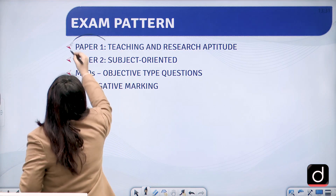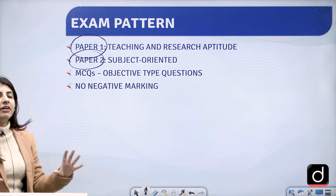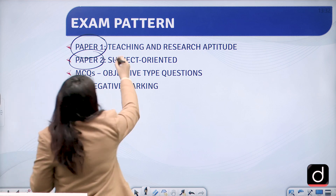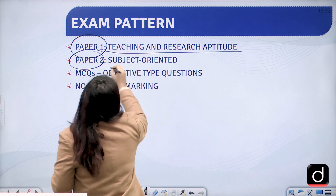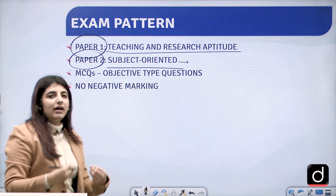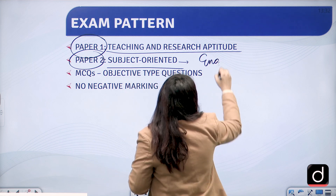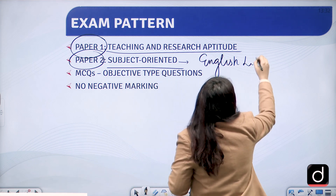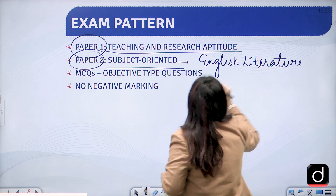Paper 1 is divided into two parts — the whole UGC-Net examination is divided into Paper 1 and Paper 2. Paper 1 is Teaching and Research Aptitude and Paper 2 is Subject Oriented. For instance, if I have done my post-graduation in English Literature, my subject for Paper 2 will be English Literature.